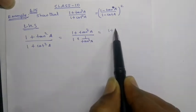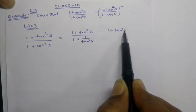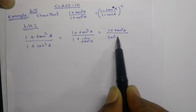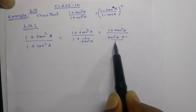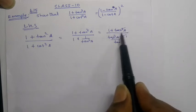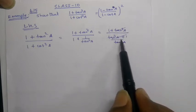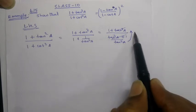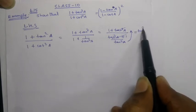Multiply numerator and denominator by tan square A. This gives us 1 plus tan square A multiplied by tan square A, divided by tan square A plus 1.